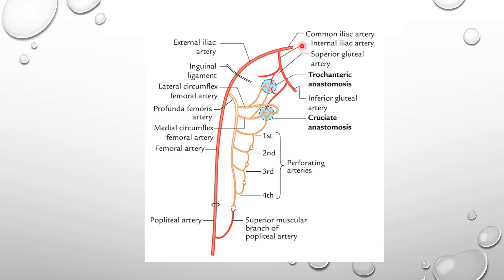Looking at the pencil-drawn diagram, the trochanteric anastomosis shows the superior gluteal branch, inferior gluteal branch, and the ascending branches of the medial and lateral circumflex femoral arteries. The cruciate anastomosis shows only the inferior gluteal artery contributing, along with three branches from the profunda femoris: the transverse branch of the lateral circumflex femoral, the transverse branch of the medial circumflex femoral, and the ascending branch of the first perforating artery.